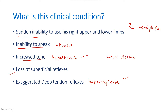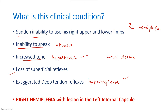When you write the clinical condition, you can write it as right hemiplegia with lesion in the left internal capsule. Why is the lesion in the left internal capsule? Both the upper limb and lower limb are affected, which means many fibers are affected. This occurs when there is a lesion in the internal capsule because the fibers are very closely packed there. So the diagnosis is right hemiplegia with lesion in the left internal capsule.